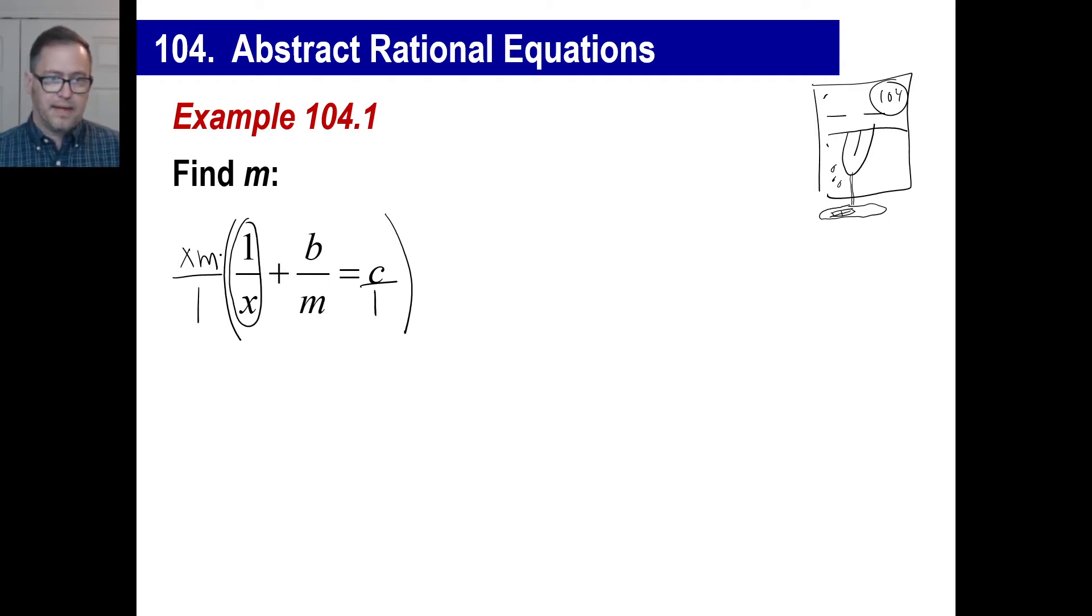We'll multiply xm times one over x. Well, you can see that the x's cancel, right? So that, this cancels. So you have m times one over one. Well, that's just m, right? m. Done.